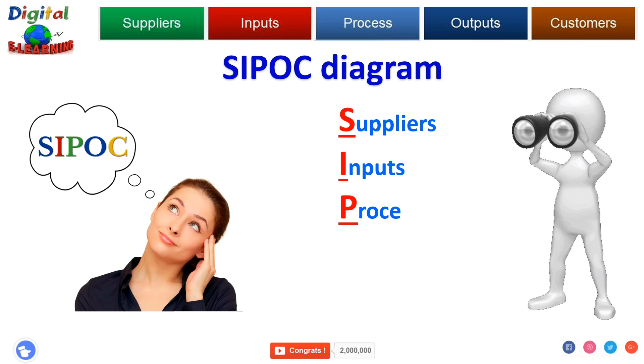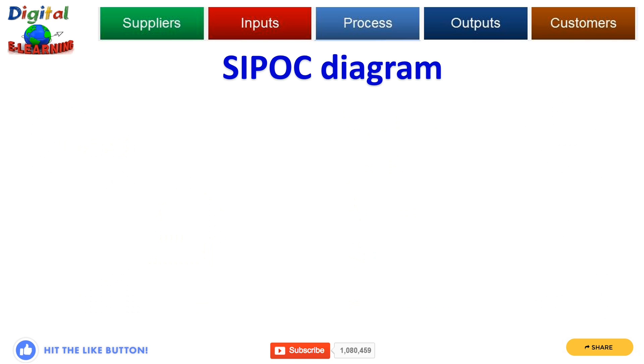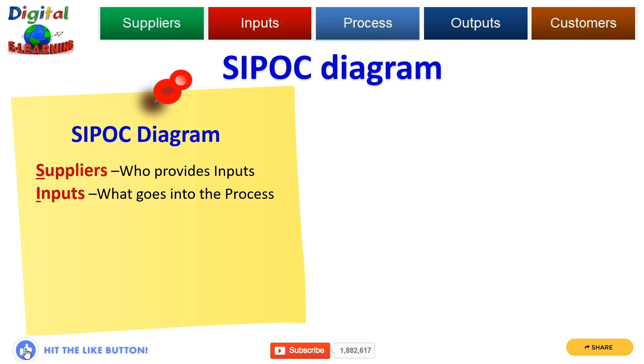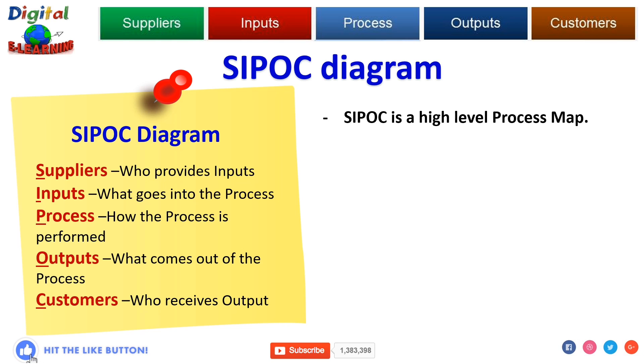SIPOC diagram: Supplier - who provides input. Input - what goes into process. Process - how the process is performed. Output - what comes out of process. Customers - who receive the output or the end users.